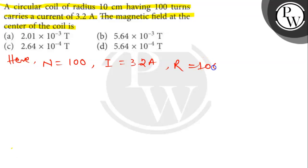Radius equals 10 cm which is 10 × 10 to the power minus 2 meter. As B equals μ₀NI divided by 2R.